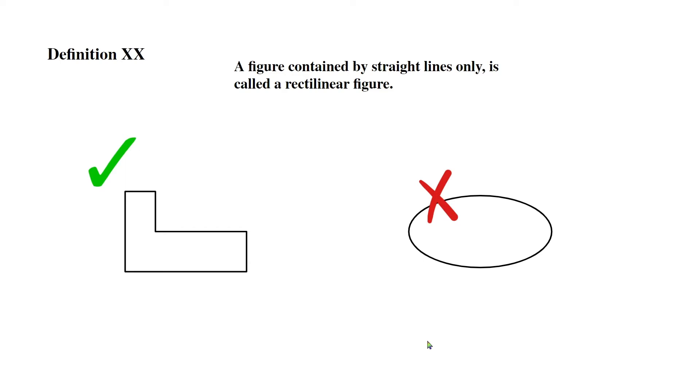Definition XX: A figure contained by straight lines only is called a rectilinear figure. So this figure over here is contained by only straight lines, so it is a rectilinear figure. But this oval shape is not a rectilinear figure because you can't see any straight lines over here.